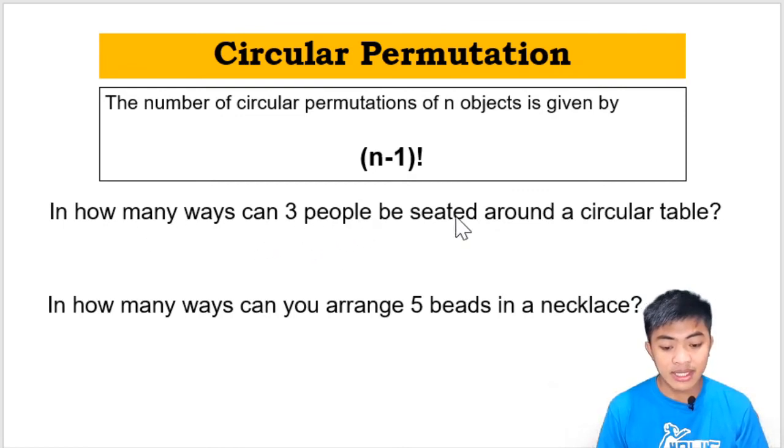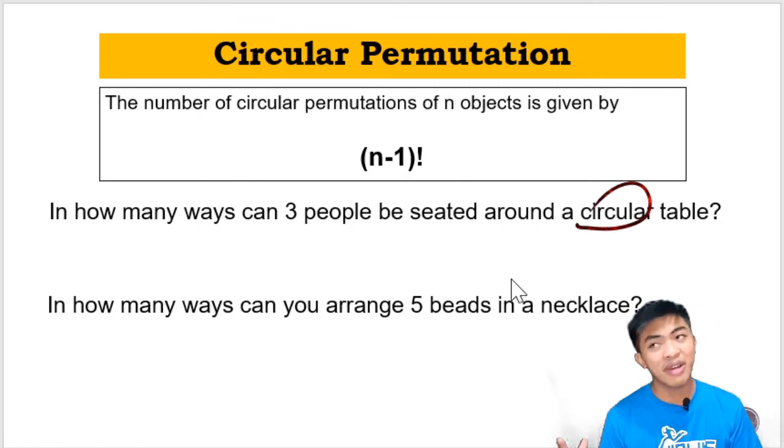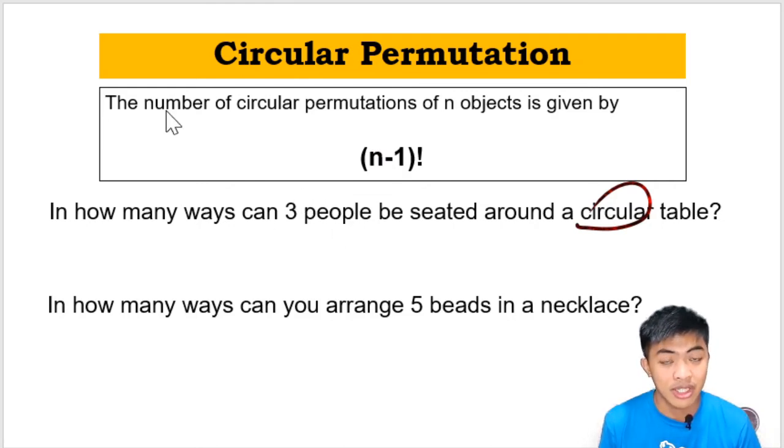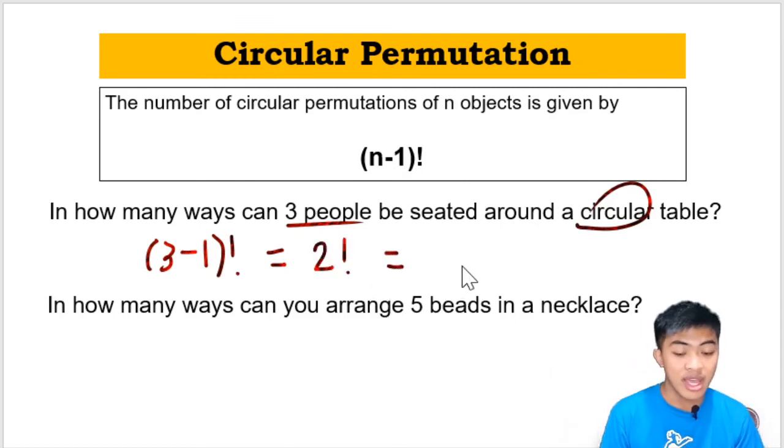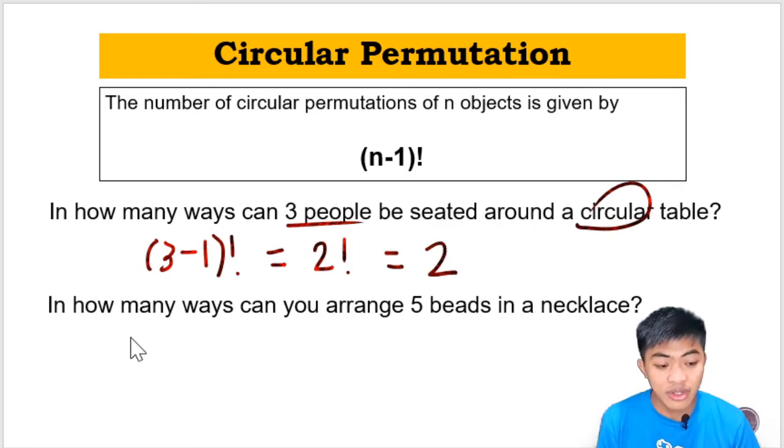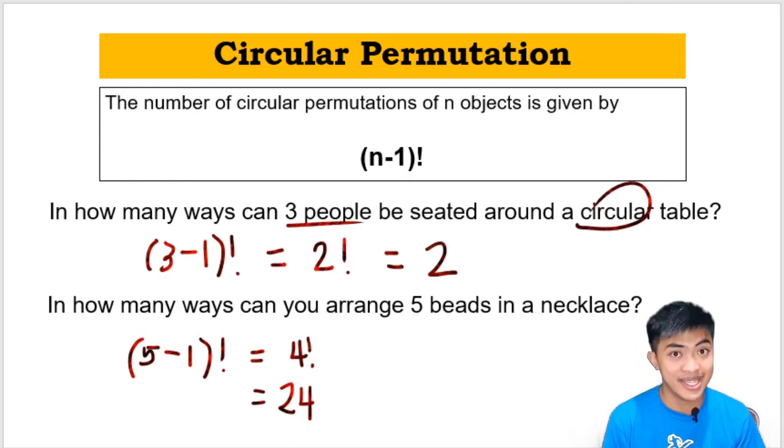In how many ways can 3 people be seated around a circular table? Ito yung sinasabi ko kanina. Basta yung mga keyword na yan: circle, round, circular, gagamitin mo yung formula na to. Ano yung isa substitute natin for n? Yun yung kung ilan yung i-arrange mo. We have here 3 people. That is 3 minus 1, the quantity factorial. 3 minus 1 is 2, magiging 2 factorial yan. 2 factorial is 2 times 1, and so the final answer there is 2. And we have here another problem: In how many ways can you arrange 5 beads in a necklace? Similar process. We get the number of beads, deduct 1, and then the quantity factorial. That will become 4 factorial, and 4 factorial is 24. There are 24 ways in which we can arrange 5 beads in a necklace.